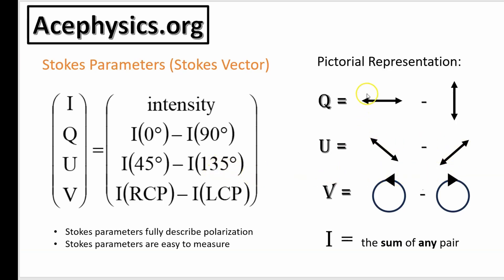The picture on the right is an easier way to understand this. Q is the difference between light viewed through a horizontal filter minus light through a vertical filter. U is the anti-diagonal minus the diagonal. V is the intensity viewed through a right circular polarizing filter minus through a left circular polarizing filter. These six intensity measurements through six different filter configurations allow you to compute four parameters — I, Q, U, and V — which completely characterize the polarization of light.